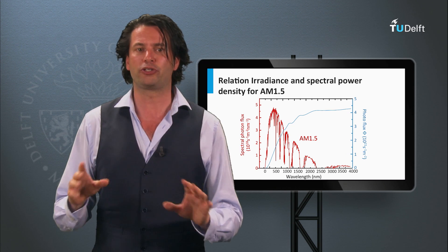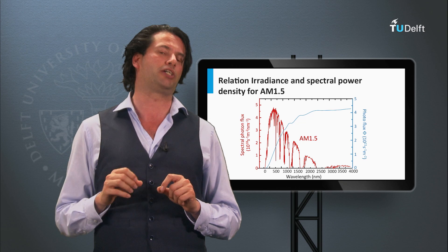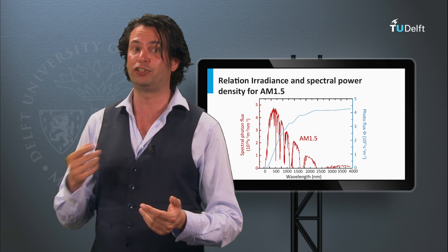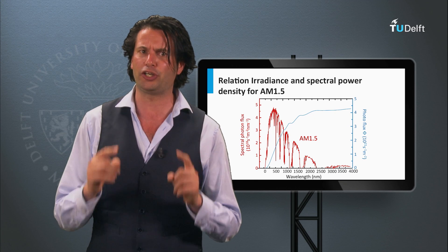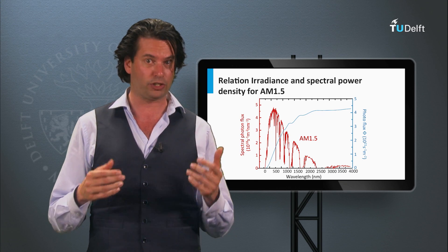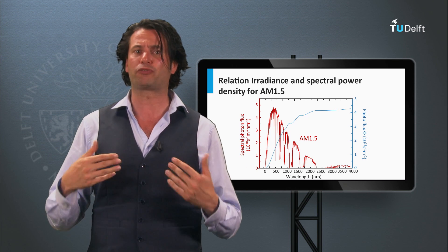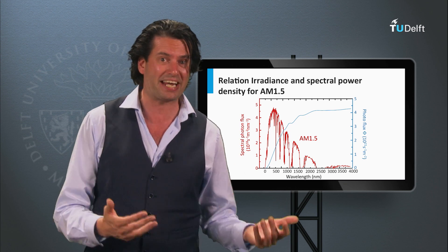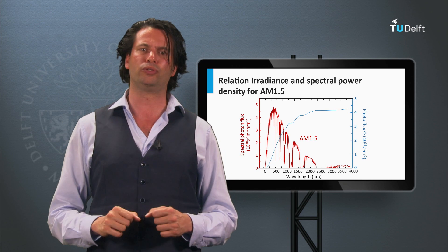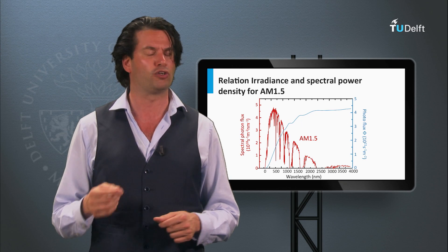As we will discuss in the coming two weeks, every photon can result in one collected charge carrier. This means that the photon flux of the solar spectrum theoretically determines the maximum current per area we can generate with a solar cell. So the concept that light can be described by quantized packages of energy, as proposed by Einstein, is a very important tool to calculate the maximum possible conversion efficiencies of solar cells.